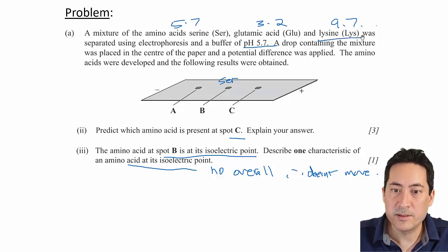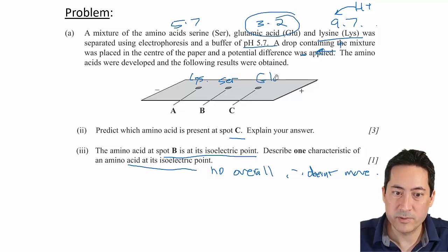So if the isoelectric point is 9.7 and that's pH 5.7, that means there's too many H pluses for its liking. The H pluses will join up to the enzyme, make it positive, and it'll go towards the negative end. And so you would expect that this would be lysine. And the same, similar sort of idea here. So this is the leftover one. And so if the pH is 5.7, that means there's a lot more OH minuses than it would expect. And therefore, that would take the H pluses away. And that would leave it as a negative molecule. The negative molecule will move from this spot and be attracted to the positive end. So which is it?